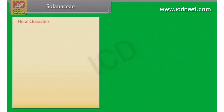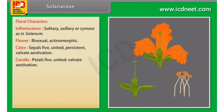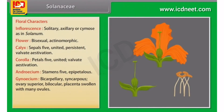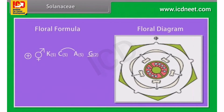Floral characters of Solanaceae: Inflorescence is solitary, axillary, cymose as in Solanum. Flowers are bisexual and actinomorphic. Calyx has 5 united, persistent sepals with valvate aestivation. Corolla has 5 united petals with valvate aestivation. Androecium has 5 epipetalous stamens. Gynoecium is bicarpellary, syncarpous; ovary superior, bilocular, placenta swollen with many ovules. Fruit is a berry or capsule. Seeds are many and endospermous.